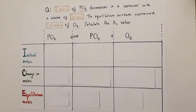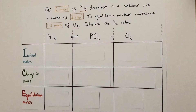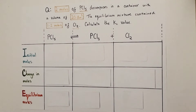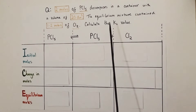I want to take you through two examples of how to calculate the Kc value using this ICE method. In this first question, we're being told we have two moles of phosphorus pentachloride, PCl5, being allowed to decompose inside a sealed container with a volume of 20 decimetres cubed. The equilibrium mixture is found to contain 1.2 moles of chlorine Cl2. From this we're asked to calculate the Kc value.